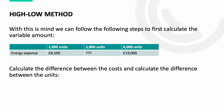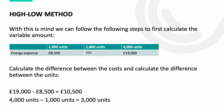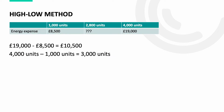The first step is to calculate the difference in costs and divide this by the difference in units. The difference in cost is £19,000 minus £8,500, giving £10,500. The difference in units is 4,000 minus 1,000, giving 3,000 units.